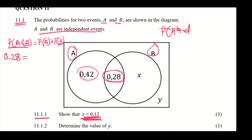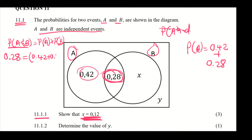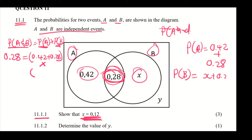The probability of A is this value plus 0.28, so P(A) equals 0.42 plus 0.28. And the probability of B is X plus 0.28, so P(B) equals X plus 0.28.